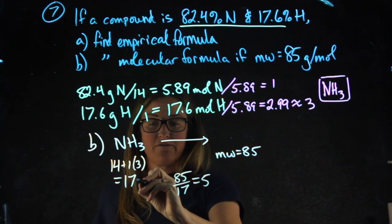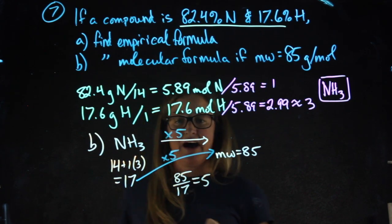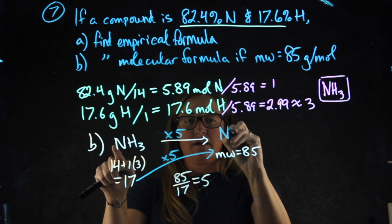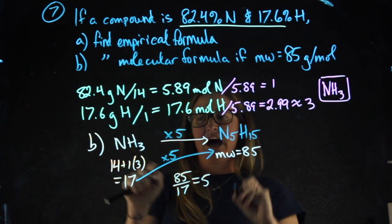Or to go from this to that, we're going to have to multiply everything by 5, giving me 5 nitrogens and 15 hydrogens.